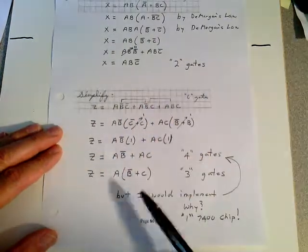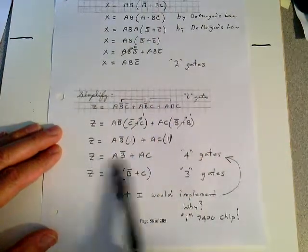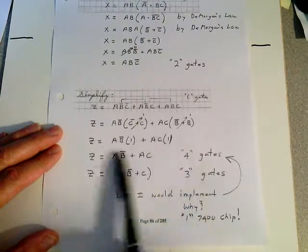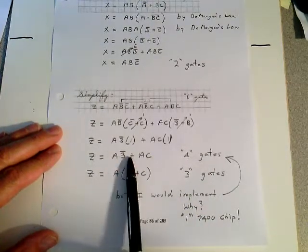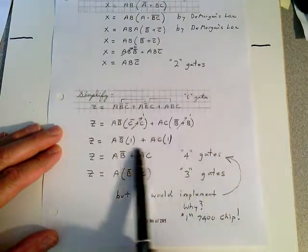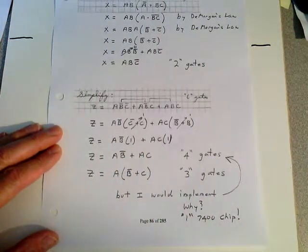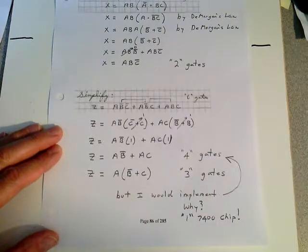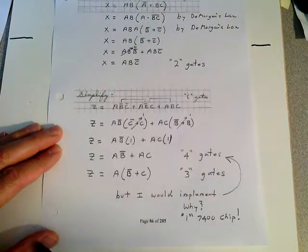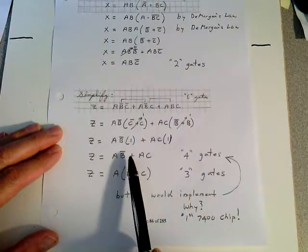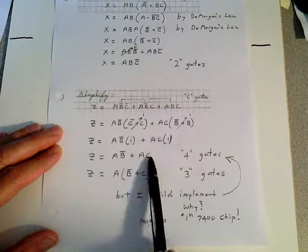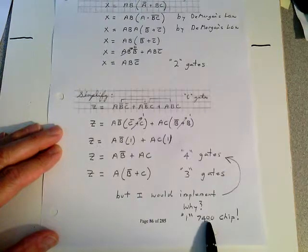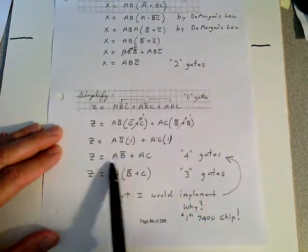When you boil this second example down, notice I get two expressions for Z. I'd probably accept either one of them in this simplification. However, this one here takes four gates, and this one here takes three gates. But in this exception, I would rather implement this. Why would I do that? Why would I choose this four-gate configuration over this three-gate configuration? Because I'm going to be wasting gates down here because it's an OR gate and an AND gate. Up here, it would take four gates, but don't forget, this is AND-OR topology. I can use all NAND gates to implement this expression. I would use all four in the 7400 chip to implement this. I don't waste anything. Make sure you understand that.